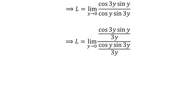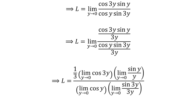Multiplying the numerator and denominator of a fraction by a common factor does not change the value of the fraction. So let us multiply the numerator and denominator by the common factor 1 upon 3y. This can be rewritten as L is equal to 1 upon 3 times the limit of cosine of 3y times the limit of sine of y upon y, divided by the limit of cosine of y times the limit of sine of 3y upon 3y, as y approaches 0.